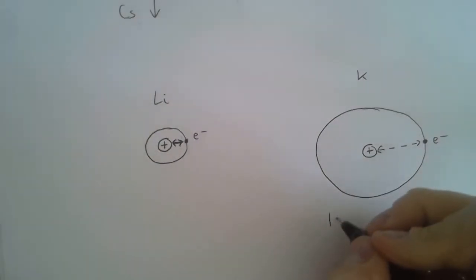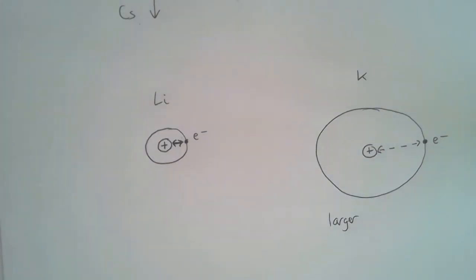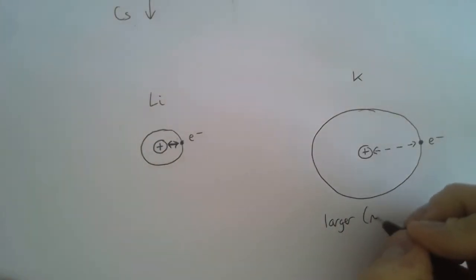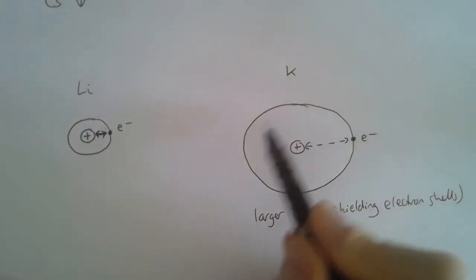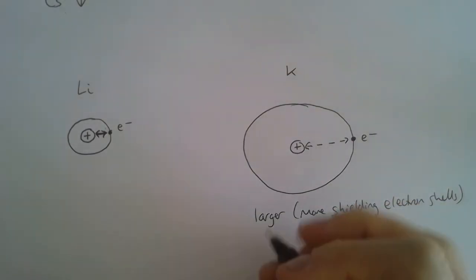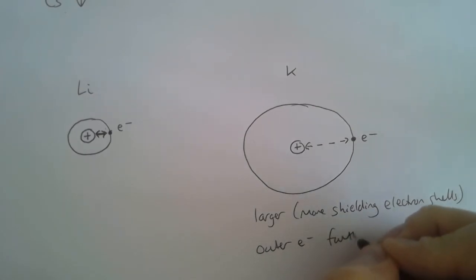Because potassium is larger, because it's got more what we call shielding electron shells—so that would be the electron shells that are in between here—it's larger, it's got more shielding electron shells, which means the outer electron is further from the nucleus.